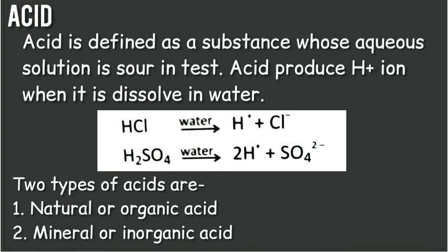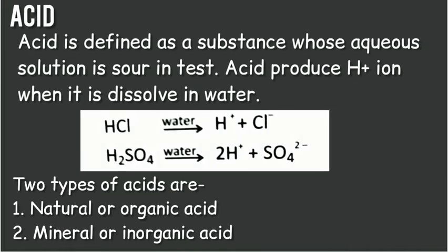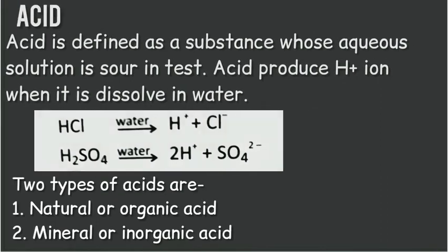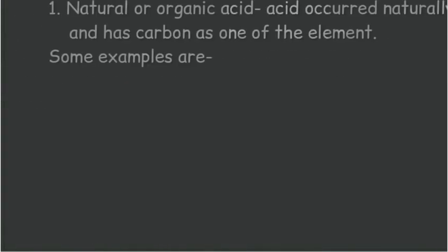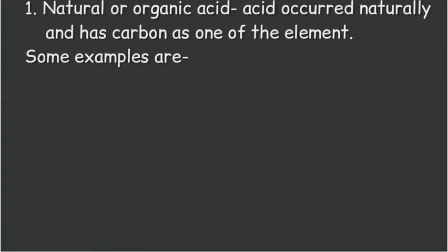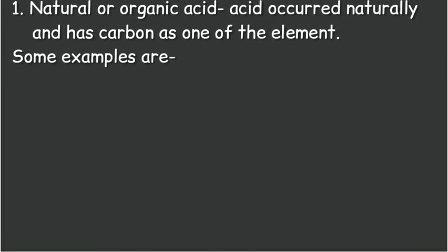There are two types of acids: natural or organic acid, and mineral or inorganic acid. Natural or organic acids occur naturally and have carbon as one of the elements.